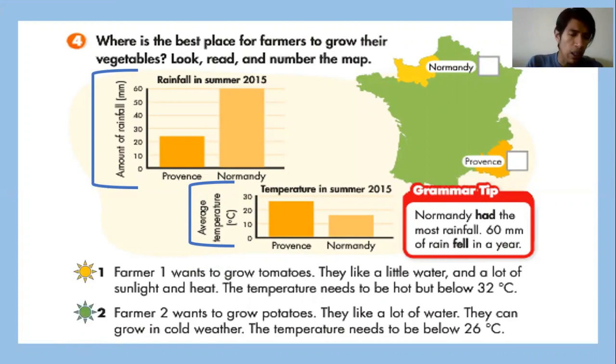Let's see what farmer one says. Farmer one wants to grow tomatoes. They like a little water and a lot of sunlight and heat. The temperature needs to be very hot but below 32 degrees Celsius.